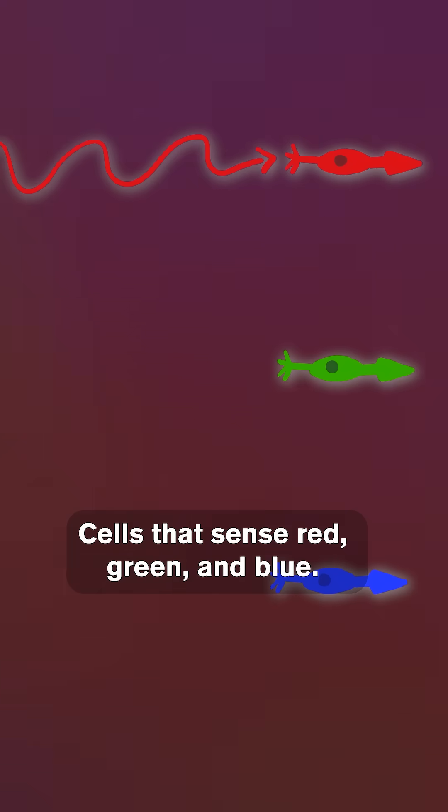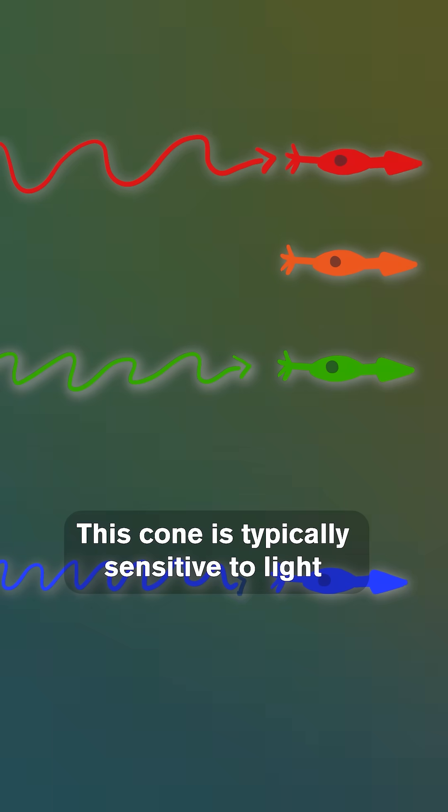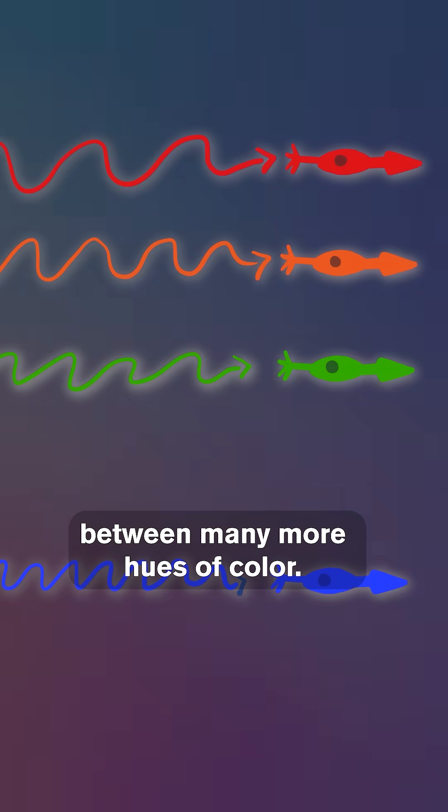Cells that sense red, green, and blue. But some people have a fourth type of cone cell. This cone is typically sensitive to light in the orange range and allows them to distinguish between many more hues of color.